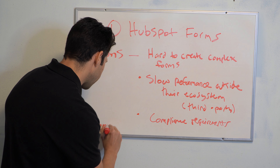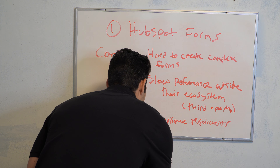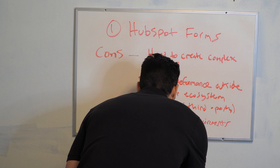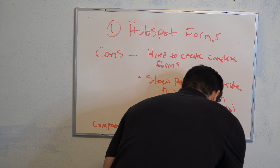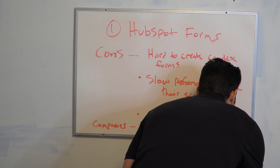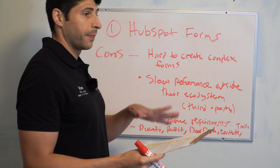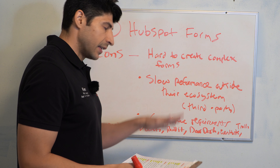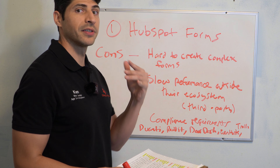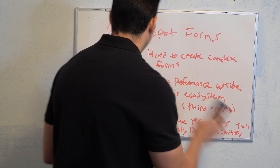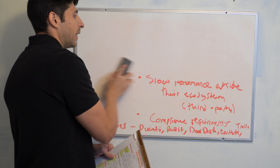I always like to add companies that use this service so you know it's trusted. Some examples are Ducati, Reddit, DoorDash, Eventbrite, and Trello. They're not Fortune 500 companies but you can pretty much trust them, especially if you're on their ecosystem. So if you're using the CRM, you might want to take a look at their forms as well.